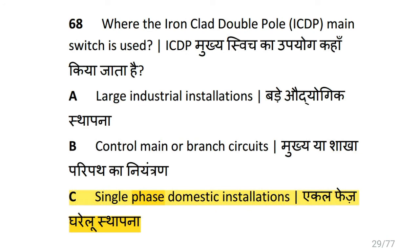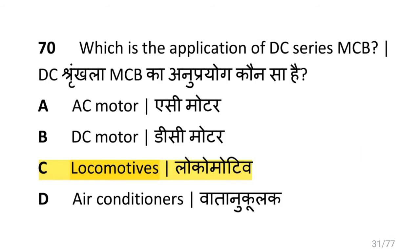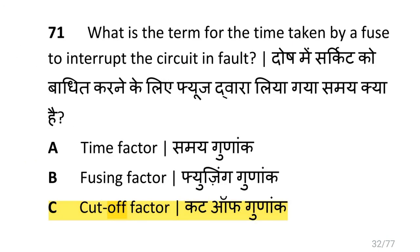Where is the iron clad double pole main switch used? That is ICDP. It is used in single phase domestic installation. Which electrical accessory belongs to the general classification of accessory? That is ceiling rose. Which is the application of DC series MCB? That is in locomotives. What is the term for the time taken by a fuse to interrupt the circuit in fault? That is cut-off factor.